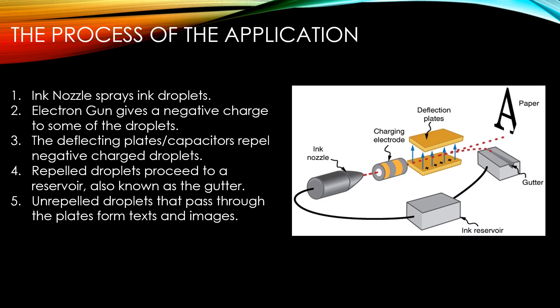The first step is that ink nozzles spray ink droplets. An electrogun gives a negative charge to some of these droplets. The deflecting plate capacitors repel the negatively charged droplets. Repelled droplets proceed to a reservoir, also known as the gutter, which you can see in the diagram to the right. The unrepelled droplets that pass through the plates are the ones that actually form text and images, or whatever you're trying to print.